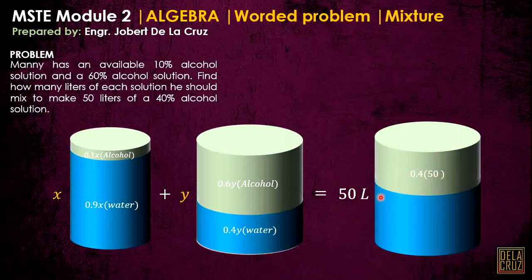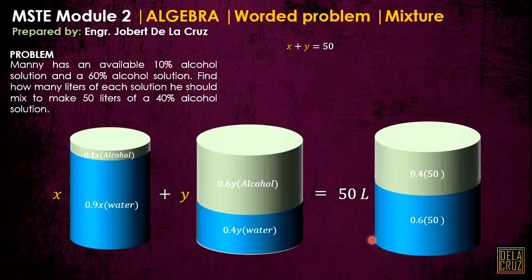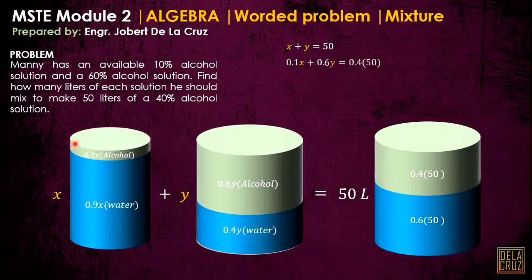So that will be 0.4 times 50 for alcohol, and 0.6 times 50 for water. To find how many liters of each solution — how to calculate X and Y — the first equation is: the volume X plus volume Y equals 50. For the second equation, just focus on alcohol: 0.1X plus 0.6Y must equal 0.4 times 50. That is equation one and equation two, and this gives us X and Y.